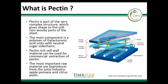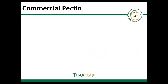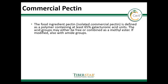Typically, dried apple pomace or citrus peels are used to extract the pectin, normally done by treatments with acids and precipitation by solvents. Commercial or isolated pectin as a food ingredient is defined as a polymer with at least 65% galacturonic acid content. The acidic groups can be free or esterified, and this degree of esterification is important for the technical functionality, especially the gelation.